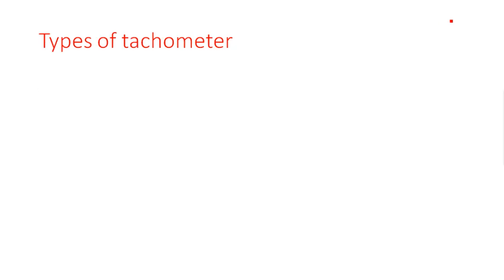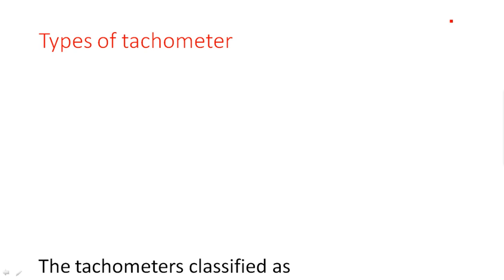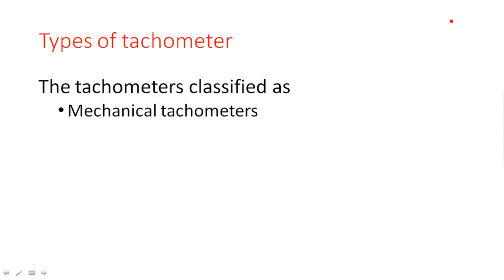Different types of tachometers work with different input voltages like AC or DC. Tachometers are basically classified into two types: mechanical tachometers and electrical tachometers. Mechanical tachometers have a spindle-type material connected in contact with the device whose movement causes the meter to respond. Electrical tachometers use a power supply — AC or DC — to determine the velocity of the device.